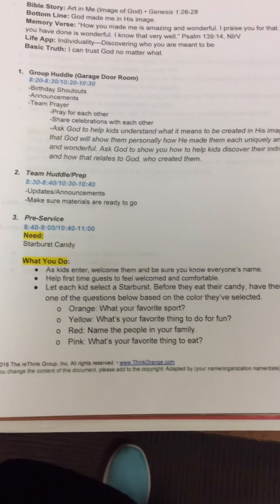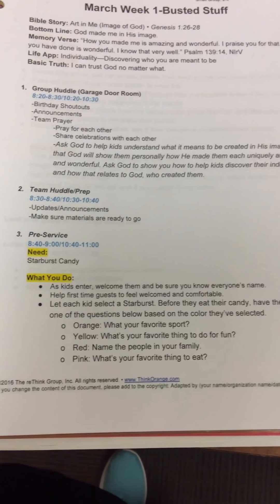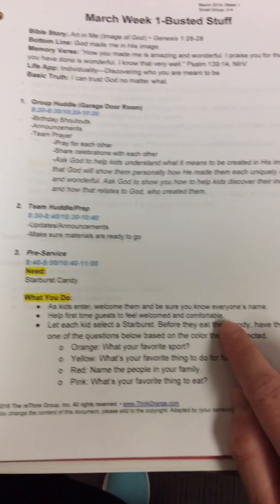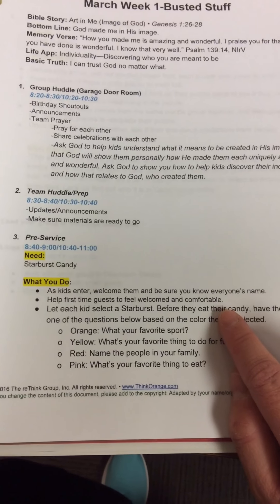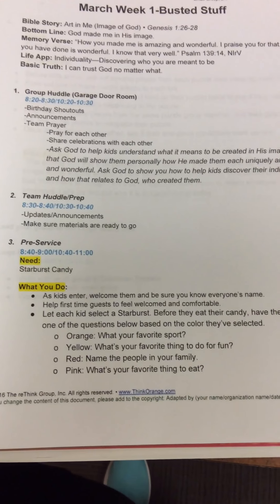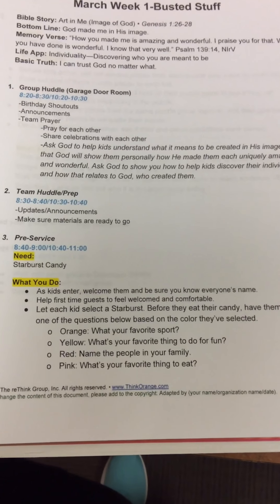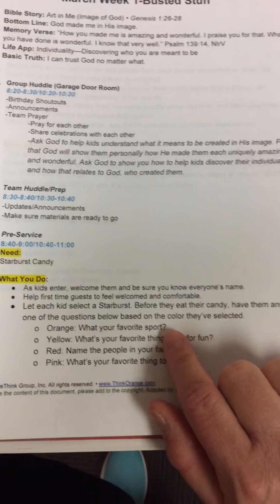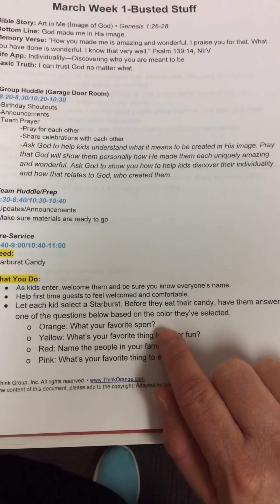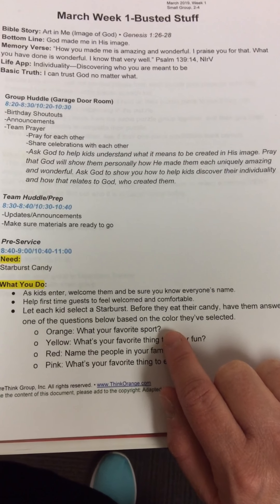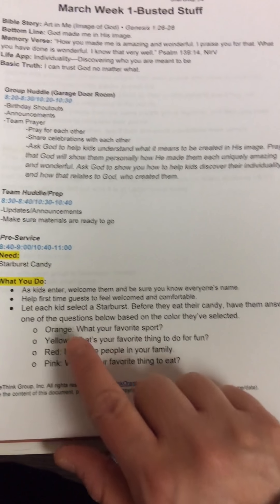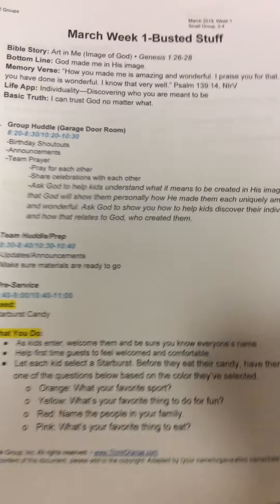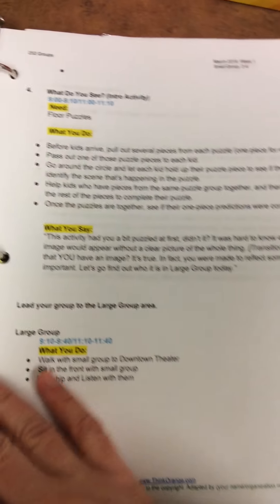For our interactivity, you are just going to have some Starburst candies. As kids enter, you're going to welcome them, make sure you know everybody's name, and make sure everybody feels welcome and comfortable — especially first-time kiddos. Then let each kid select a Starburst, but before they eat their candy, they have to answer one of the questions below based on the color Starburst they pick. Just a fun little icebreaker.